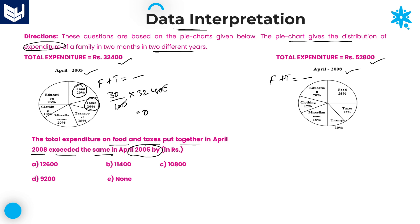Carrying out the multiplication, the total food and taxes together in 2005 comes to 9,720.